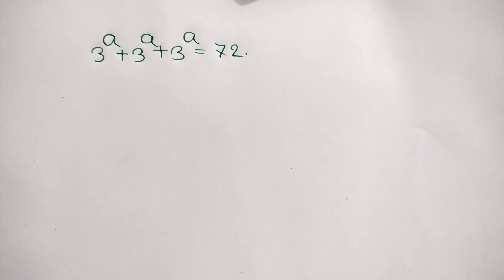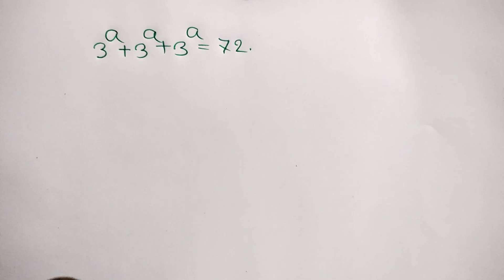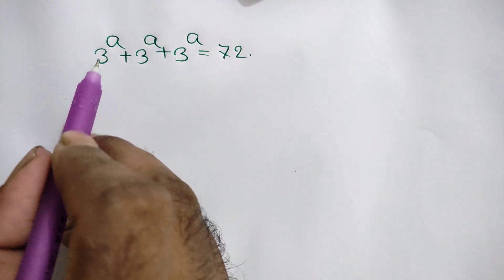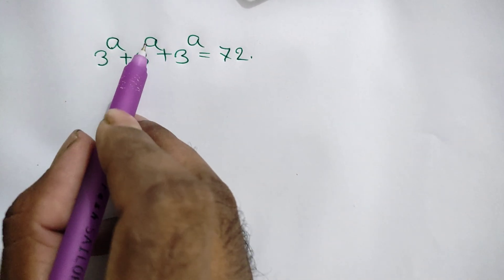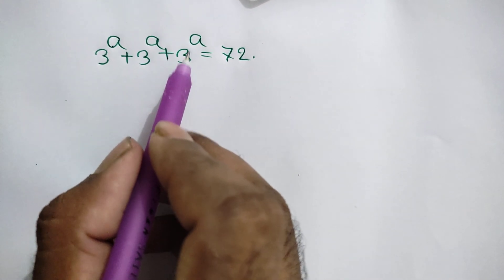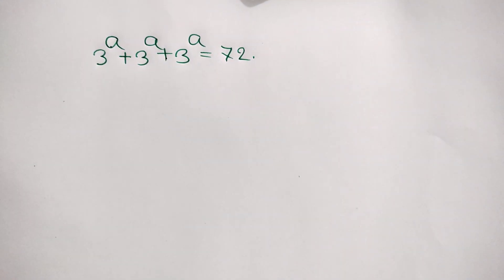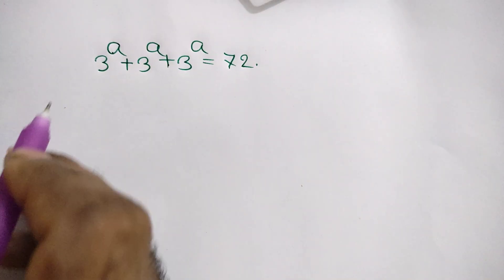Hi everyone. In this video I am going to show how to find the value of a, where 3 to the power a plus 3 to the power a plus 3 to the power a is equal to 72.